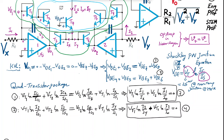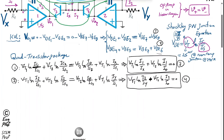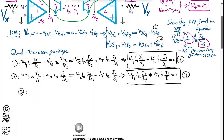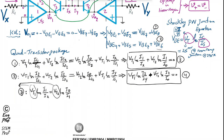Since IS has been eliminated, only the thermal voltage Vt remains in both equations. VT = kT/Q varies linearly with temperature. The change in VT between the two packages is minimal if the packages are physically close together.